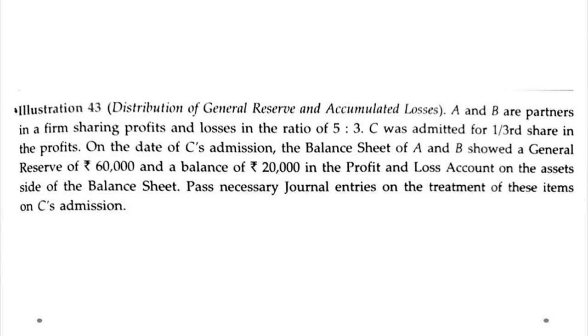Now let's see an example to make this concept clear. In the question, A and B are partners in ratio 5:3. C is admitted with 1/3 share. General reserve is $60,000 and P&L has a debit balance of $20,000. We have to do the journal entries.